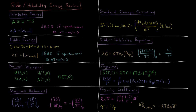The change in Gibbs energy during a process is equal to the maximum amount of non-pressure-volume work which can be obtained from the system. Electrical work is one example of non-mechanical work that could be obtained from a system with a negative change in Gibbs energy.